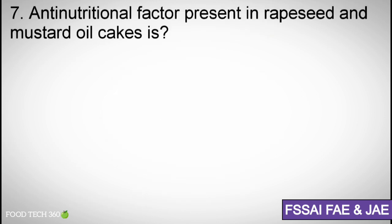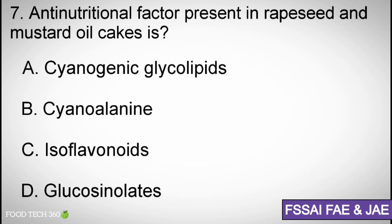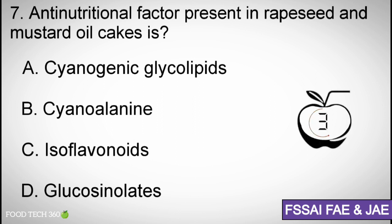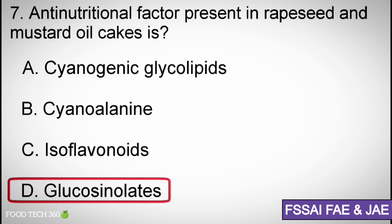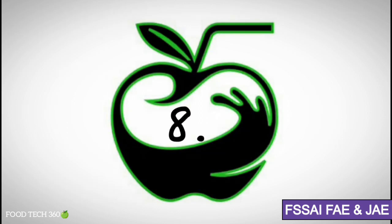Question number 7: The anti-nutritional factor present in rapeseed and mustard oil cakes is — A. Cyanogenic glycosides, B. Cyanoalanine, C. Isoflavonoids, D. Glucosinolates. Correct answer: D. Glucosinolates.